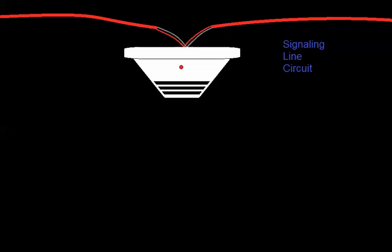The smoke detector is constantly communicating with the panel to make sure it's still on the circuit and still functioning. But when smoke enters the chamber, the smoke detector is not what decides whether or not it's an alarm. What happens is it gives the fire alarm panel an analog value that represents the amount of smoke in the chamber — constantly telling it how dirty it is or how much smoke is present. The panel is what decides whether or not it goes into alarm.